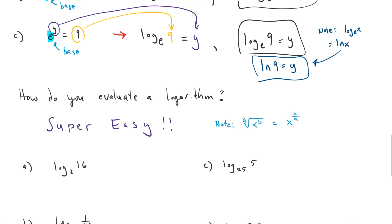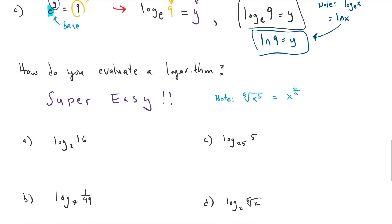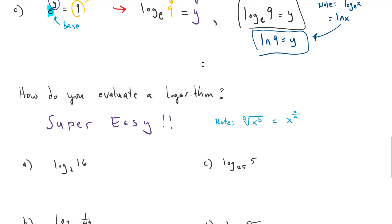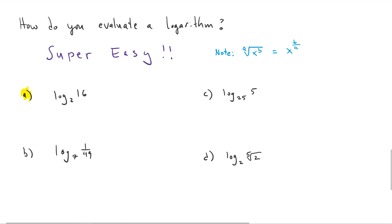Alright, we've finished our definition and our transforming from logarithmic to exponential. Now we just have to discuss how to evaluate a logarithm. The good news is it's actually super easy — evaluating logarithms is much easier than you would expect. Let's start with exercise A: we're going to change this logarithm into its equivalent exponential form.